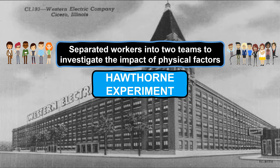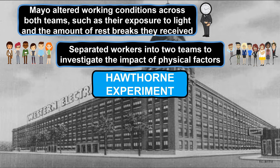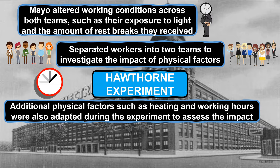Mayo altered the working conditions across both teams — for example, increasing the amount of light employees were exposed to or the length of rest breaks employees received in one team and then decreasing them in the other. It was essentially varying the physical factors of the working environment to see if there was an optimum amount and the impact it had on employees' motivation or productivity levels. Heating and working hours were amongst the additional physical factors which Mayo adapted during the experiment to assess their impact.